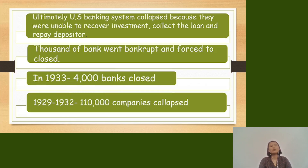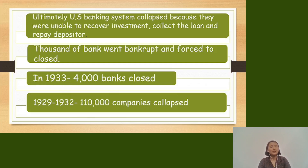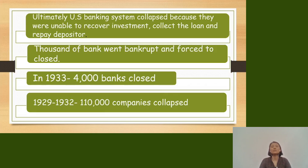Thousands of banks went bankrupt and were forced to close. In 1933, 4,000 banks closed. Between 1929 and 1932, 110,000 companies collapsed.